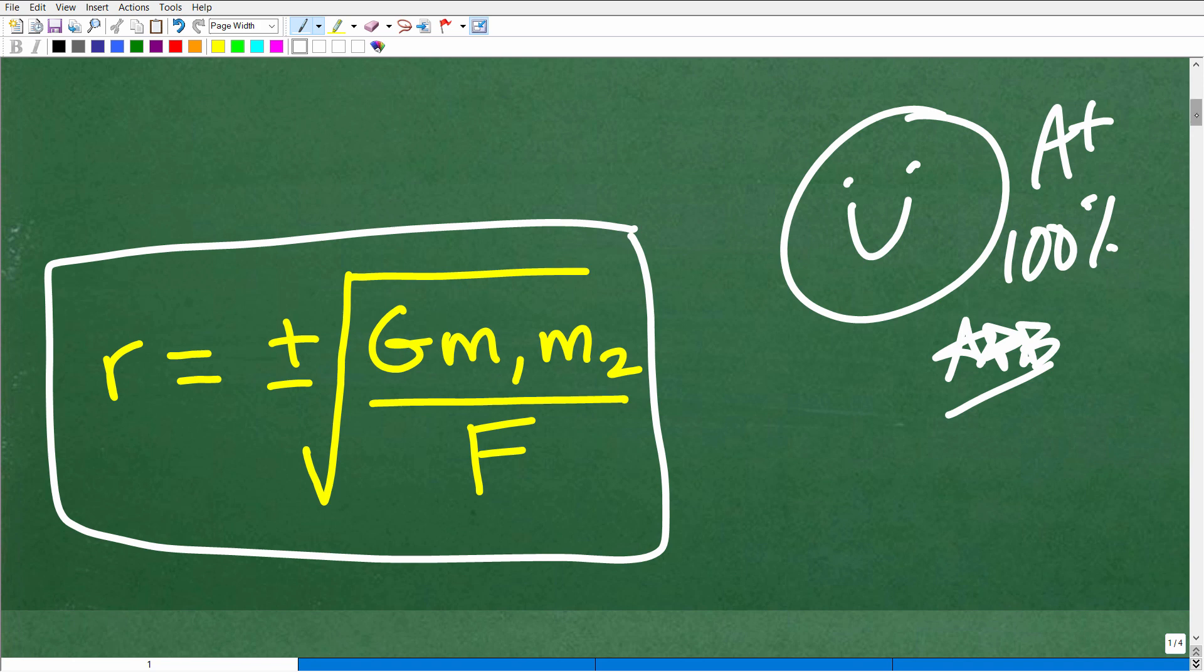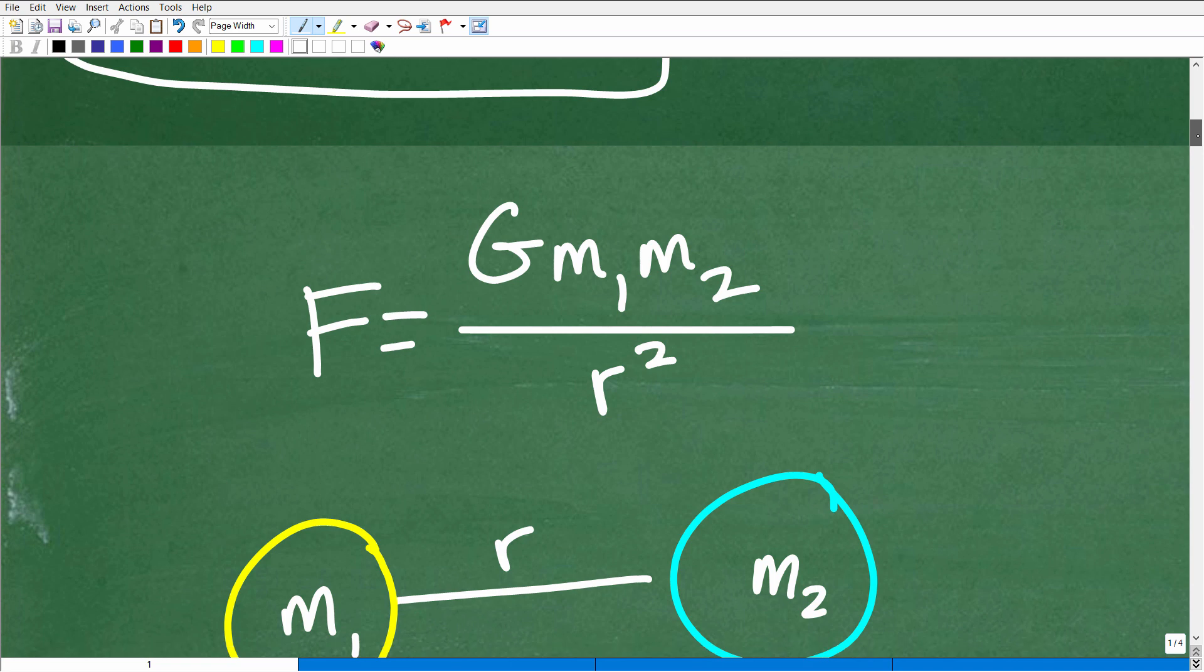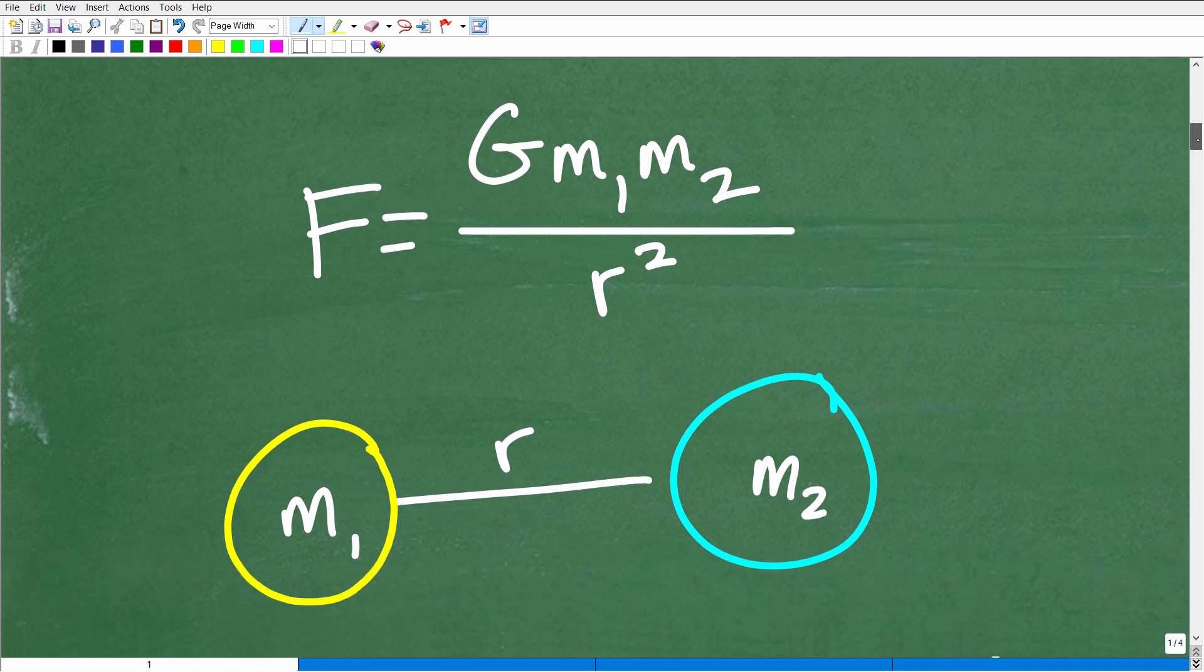So let's go ahead and get into the solution here. Here is the equation. Effectively, what's going on is that we have a gravitational force. So let's say this is the moon and here's the earth. The moon is orbiting around the earth because the earth is a larger mass.